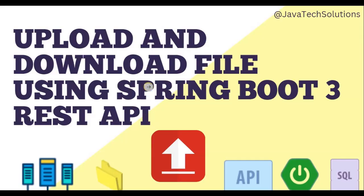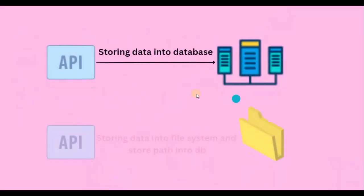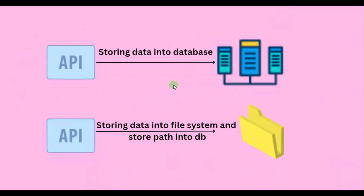Hello everyone, today I'm going to explain how we are going to upload and download files using Spring Boot 3 and REST APIs. For uploading and downloading there are basically two approaches, which I already discussed in one of my videos. The first approach is to store the data as a string into a database and then fetch it from the database. The second approach is to store the data into the file system and store the path into the database.